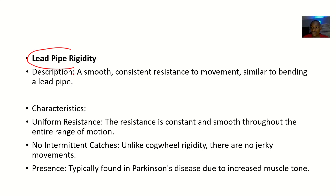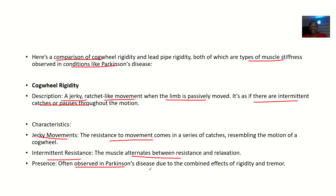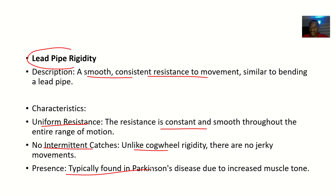For lead pipe rigidity, the description is a smooth and consistent resistance to movement, similar to bending a lead pipe — that's why it's called lead pipe rigidity. The characteristics include uniform resistance: it's not on and off like cogwheel. The resistance is constant and smooth throughout the entire range of motion, with no intermittent catches and no jerky movements. It is typically found in Parkinson's disease due to increased muscle tone.